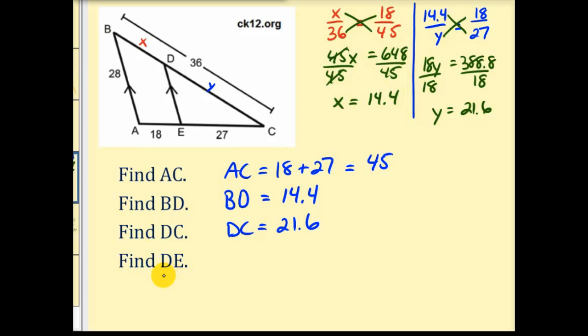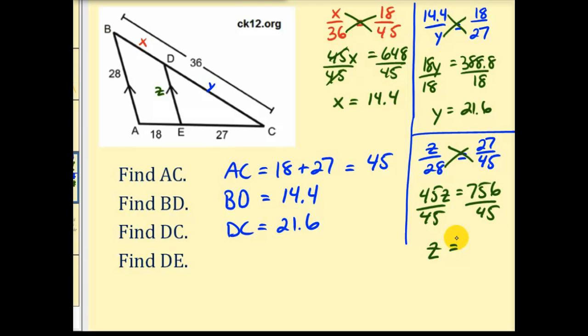The last length we need to determine is the length of DE, which is the length of this parallel segment. Let's go ahead and call it Z. And this small triangle and this large triangle are actually similar triangles, which means their sides are proportional. So we could use the proportion Z to 28 must equal 27 to AC, which was 45 units. Again now we'll cross multiply. 45Z must equal 28 times 27, which is equal to 756. We'll divide both sides by 45. 756 divided by 45 is 16.8. So the length of DE is 16.8 units. And that's going to do it for this video.